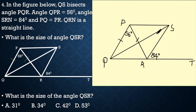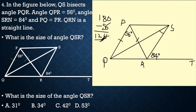We are required to find angle QSR. We start with the isosceles triangle which has 56 degrees at the apex. The two base angles are equal, so we get 180 minus 56, which gives 124, then divide by 2 to get 62 degrees for each base angle. We are told line QS bisects angle PQR, so the bisector divides 62 into two equal halves of 31 degrees each.